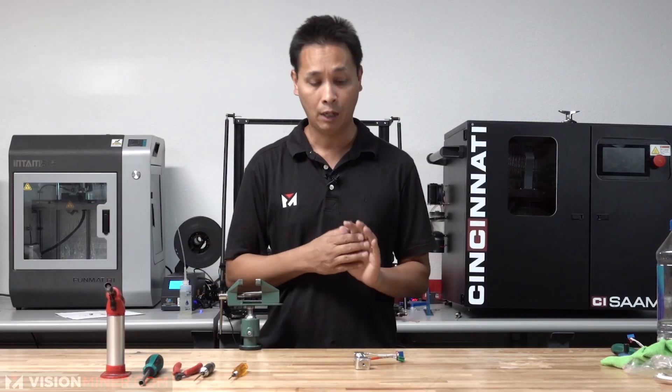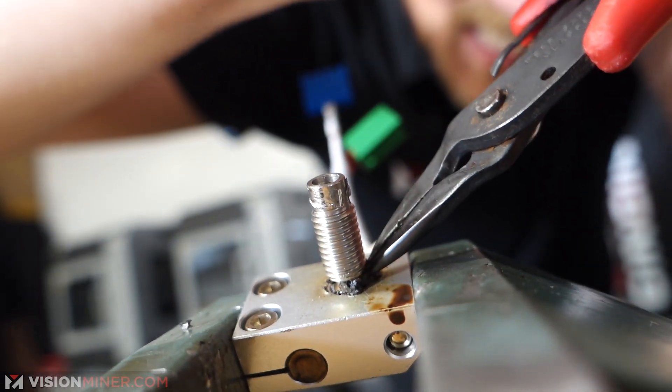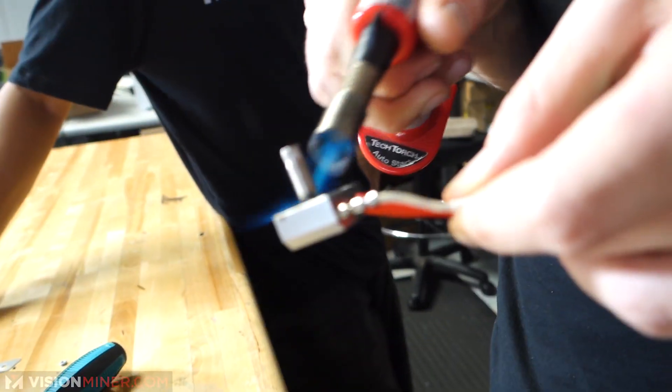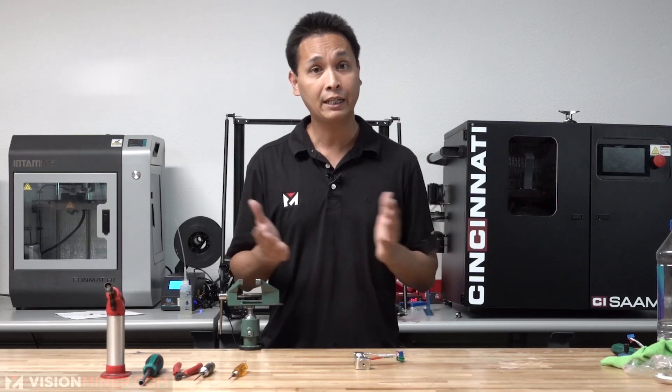Now the torch is for burning up the filament. Sometimes the nozzle and the heat break is really hard to get out. That's because the filament is on there, it gets really hard and you do have to burn them off to get them off much easier. With that being said, let's get right onto it.